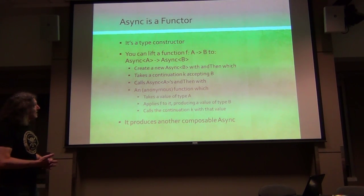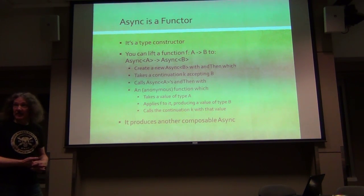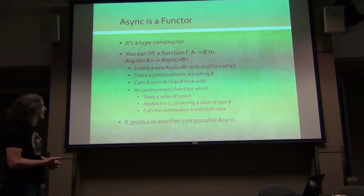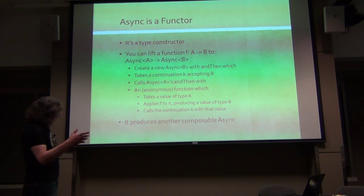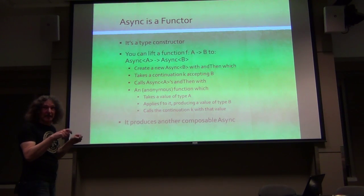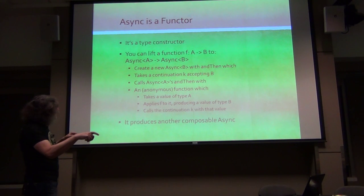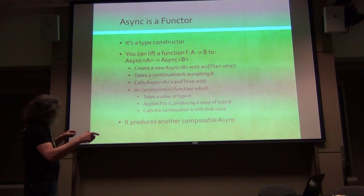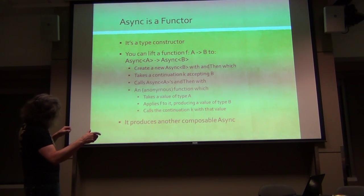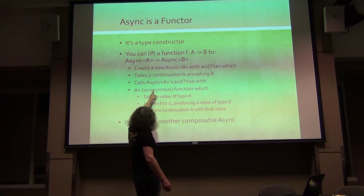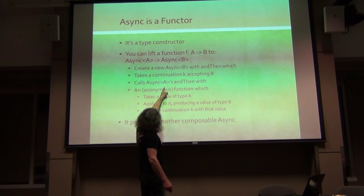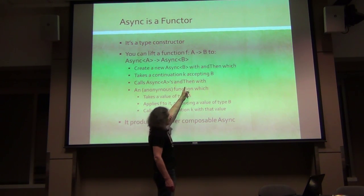Here's how you do it. You create a new Async B, and you have to implement ANDTHEN. So we implement ANDTHEN, which is a method that takes a continuation K. ANDTHEN always takes the continuation to retrieve the value. And inside this ANDTHEN function, it calls the first argument - Async A - which also has an ANDTHEN method.